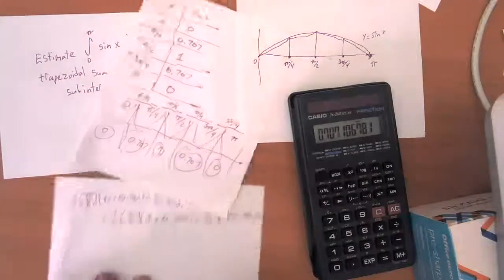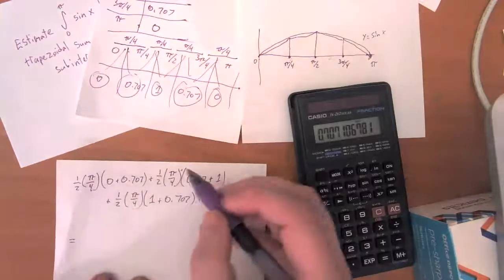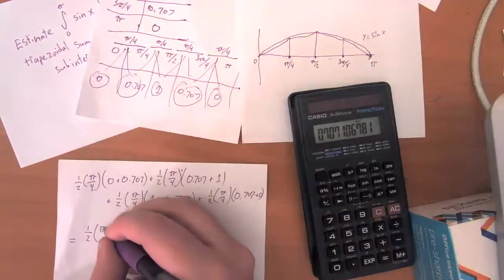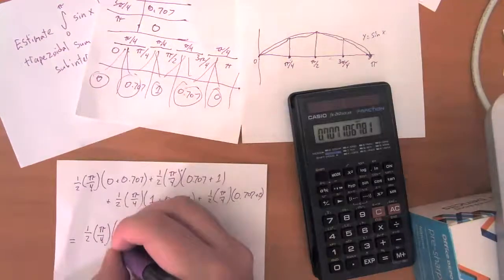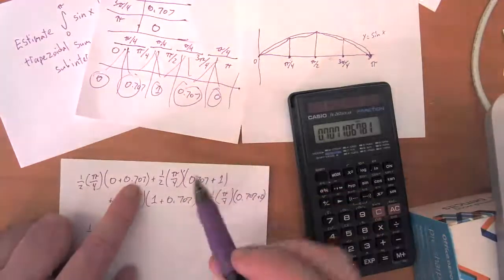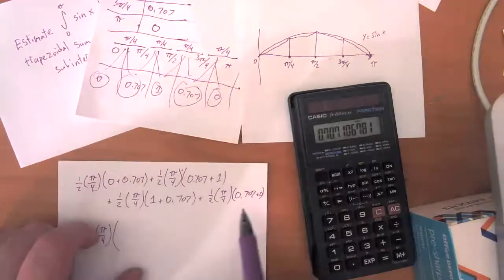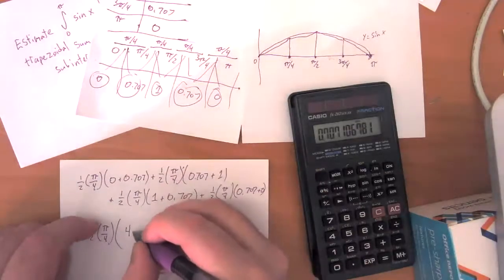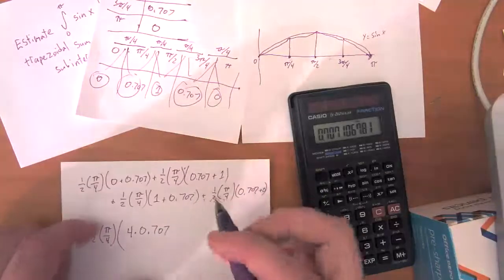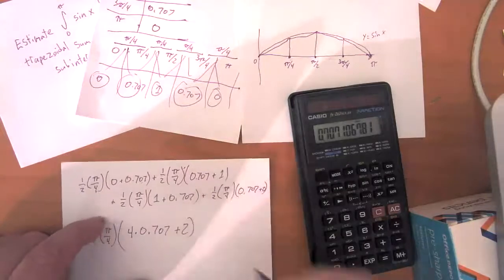So let's collect a whole bunch of terms together and carry out our common term one half times pi over four times - well, we've got zero, I don't need to count that. How many 0.707s am I adding in? One, two, three, four - four times 0.707. And then I've got two ones in there, too. So that's my total estimate.